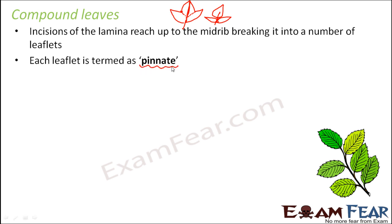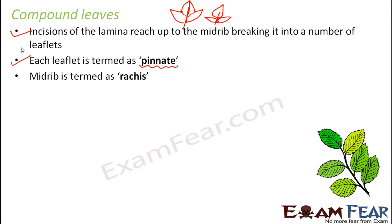In the case of a compound leaf, each leaflet is given the term pinnate — so each leaflet is known as a pinna. The midrib is known as the rachis. Here, this central axis becomes the rachis, and the parts on either side are the leaflets.